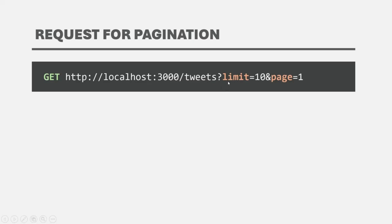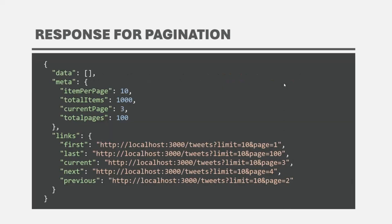When we send the paginated data from the API, we need to structure the response so that on the client it will be easier for users to navigate from one page to another. We are going to create a pagination response with three main properties. The first is data, which will contain the paginated data — if the user requested 10 tweets per page, this array will contain those 10 tweets. Apart from data, we are also going to have a meta property, which will store information like how many items per page we are sending, how many total items we have — for example, total tweets or total users — and that information will also be sent with the response.